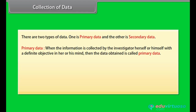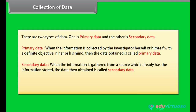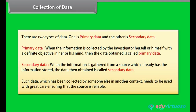Primary data: When the information is collected by the investigator herself or himself with a definite objective in mind, the data obtained is called primary data. Secondary data: When the information is gathered from a source which already has the information stored, it is called secondary data. Such data needs to be used with great care, ensuring that the source is reliable.